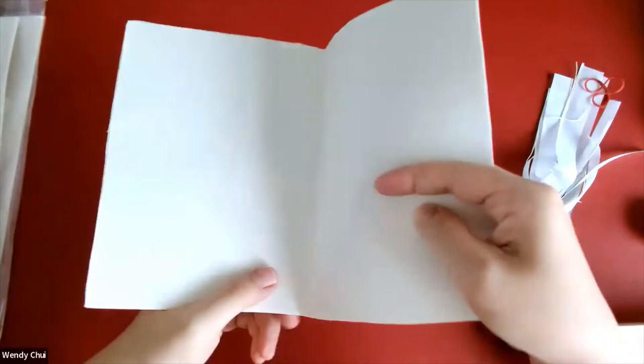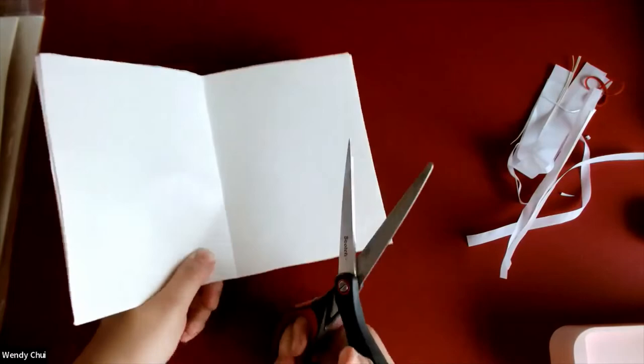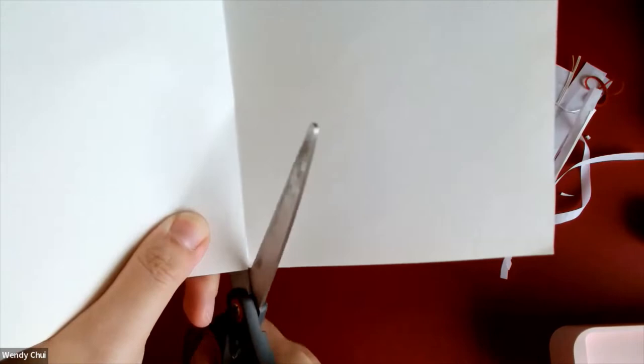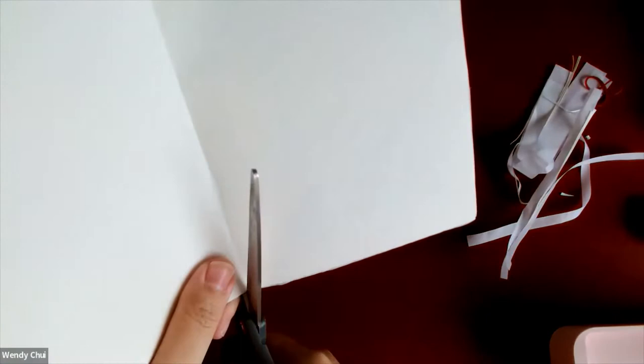Once you're happy with the way your sketchbook is looking, you are going to make a small cut at the top and bottom of your book. So very carefully make a tiny cut in the middle of the papers where it is folded like this.